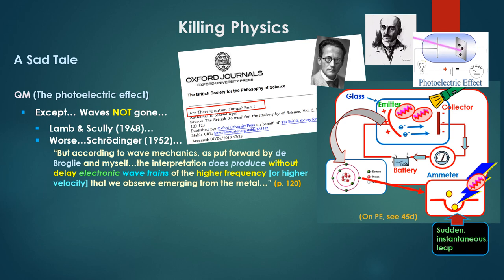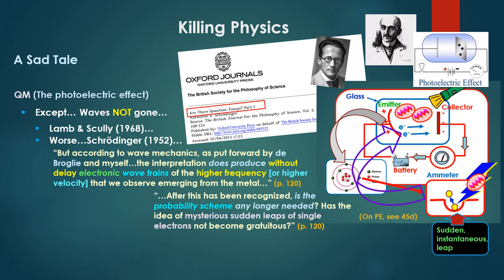Worse yet, Schrodinger in 1952: But according to wave mechanics, as put forward by de Broglie and myself, the interpretation does produce, without delay, electronic wave trains of the higher frequency or higher velocity that we observe emerging from the metal. Note, there at the bottom right there, what we're referring to in the standard explanation the photoelectric effect: a little wave-particle with an energy, that little pink thing there, hits an electron seen in an orbit, visualizes an energy well, so to speak, and bops it out of that energy well. Like in a sudden, instantaneous leap. Instantaneous. No transition. No development. Nothing. So it knocks the electrons off the metal plate, out of that energy well, with a certain velocity proportional to the frequency of the impacting wave on that plate.